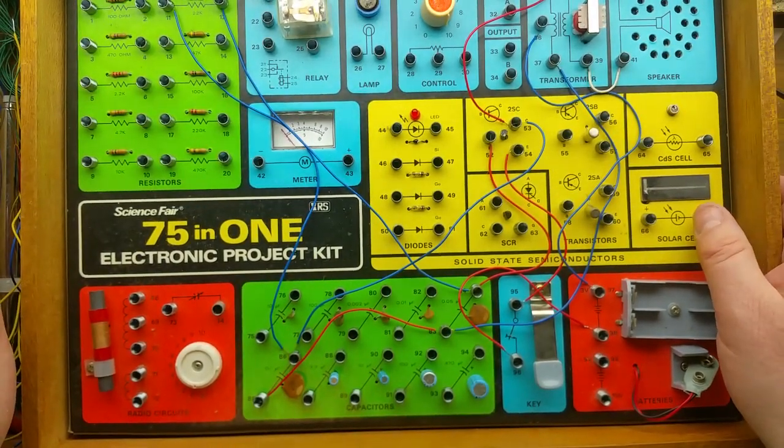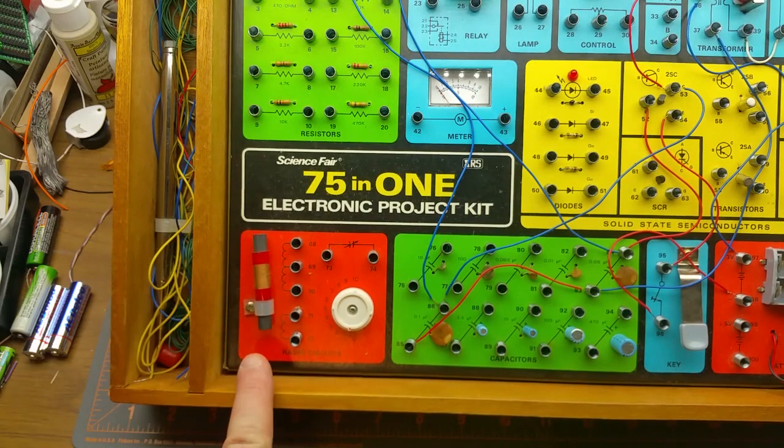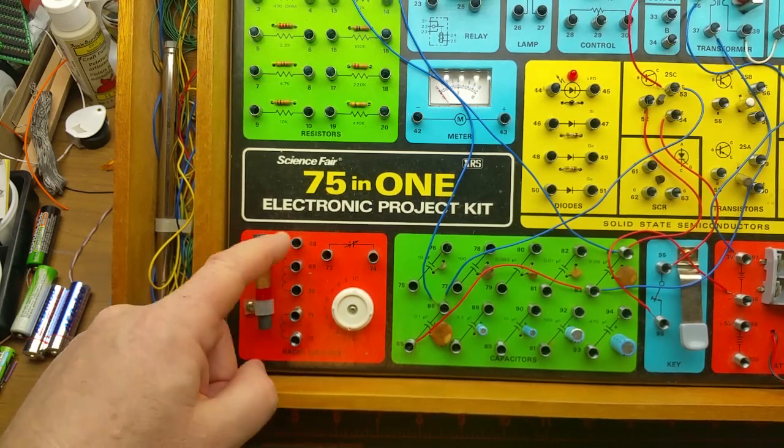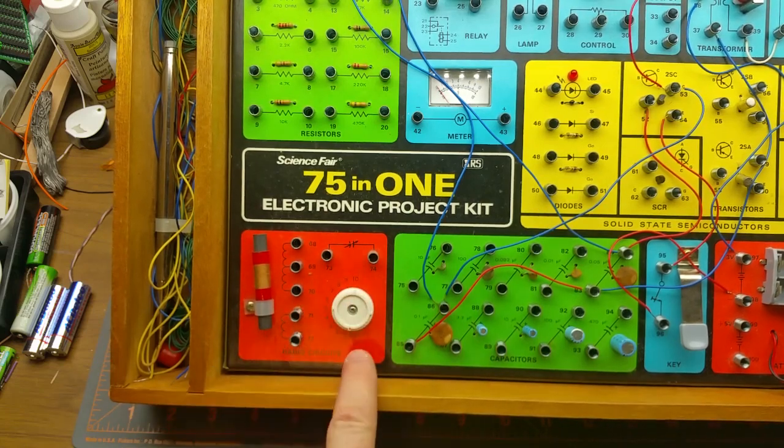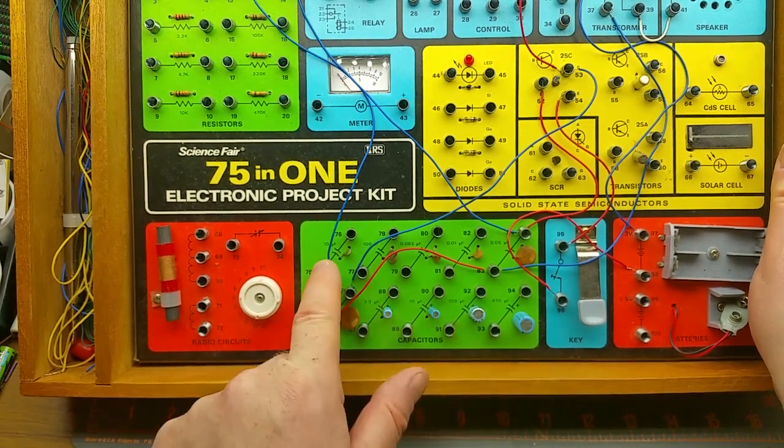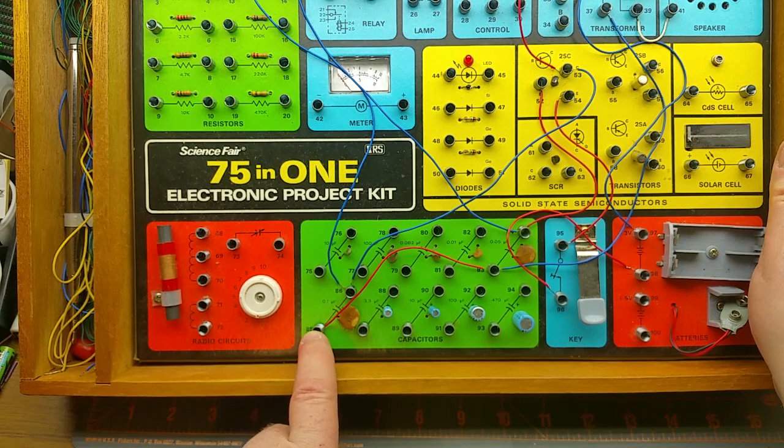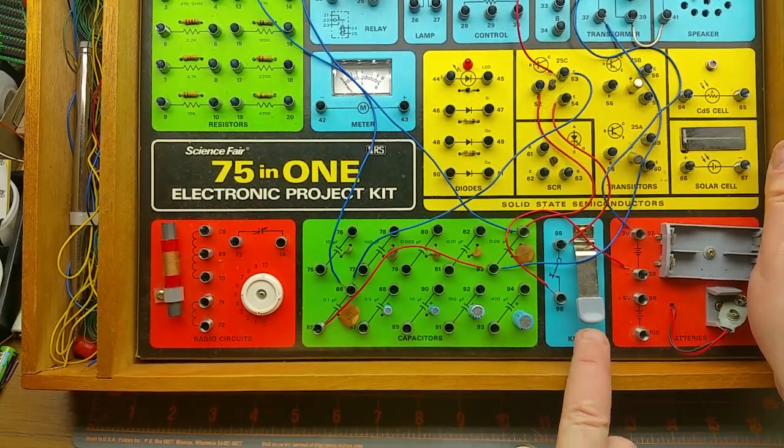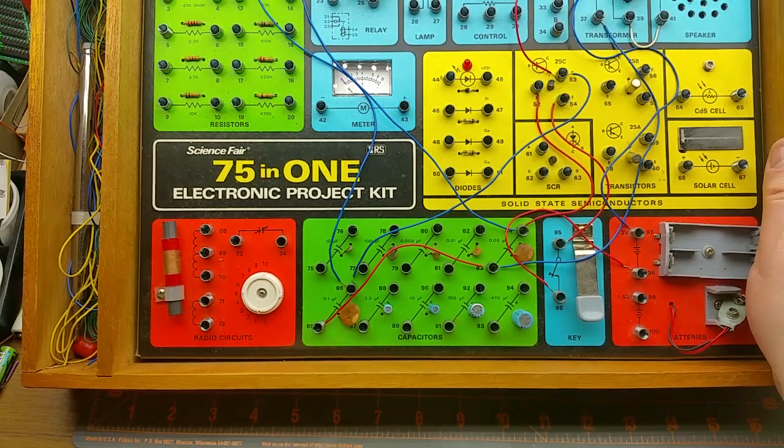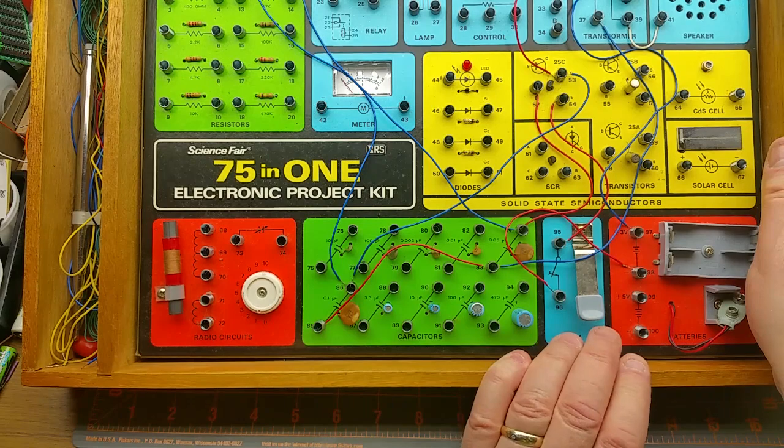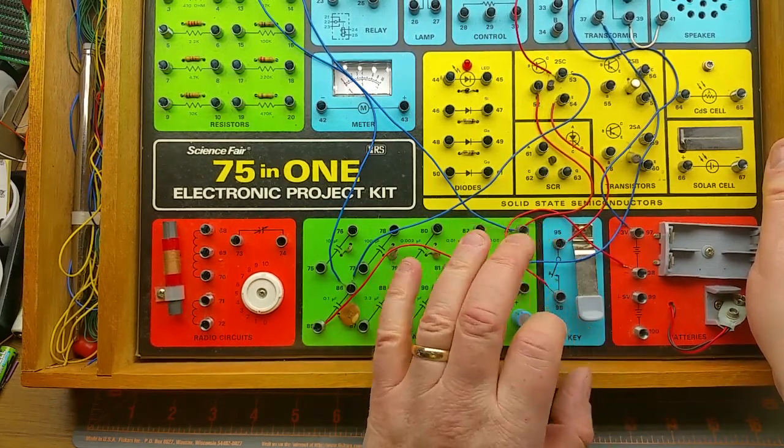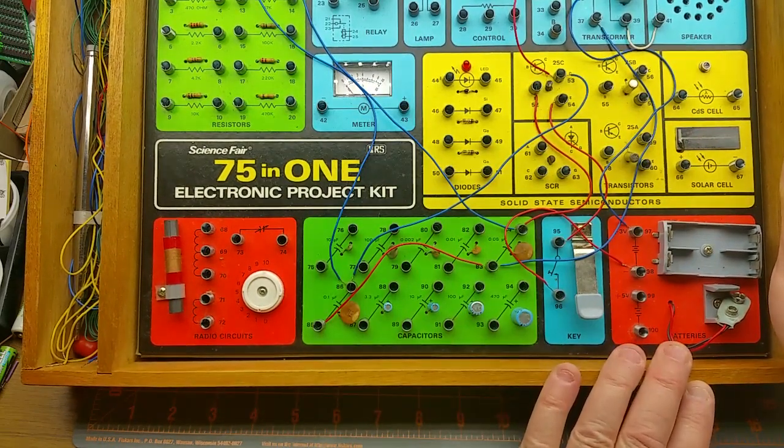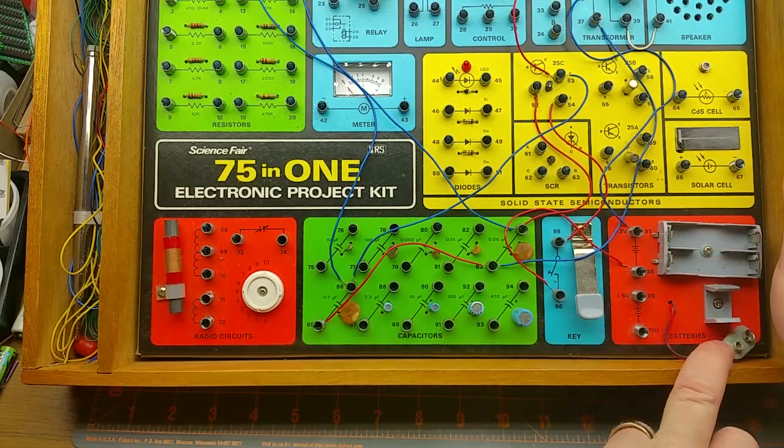CdS cell, aka variable resistor, light dependent resistor. A solar cell which is you shine light on it and it gives you electricity - a really crude old solar cell but a solar cell nonetheless. Bottom left corner, radio circuits. We have an inductor on a ferrite with two different sets of coils, one center tapped and one not. You have a variable capacitor with the correct variable capacitor symbol and we have a handful of capacitors from 10 pF up to 0.1 microfarad in ceramic and then 33 microfarad up to 470 microfarad in the electrolytic. Then we have a key.